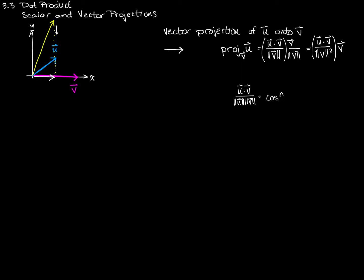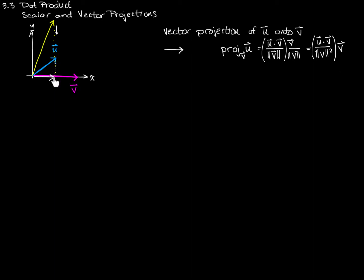This is what we call the vector projection of u onto v, and this formula is a particularly difficult one to really wrap your head around. The best thing to do with this one is just to make a note of this formula, write it down, memorize it. Essentially what we're doing with this formula is finding the vector that we get when we cast a shadow of one vector onto another.